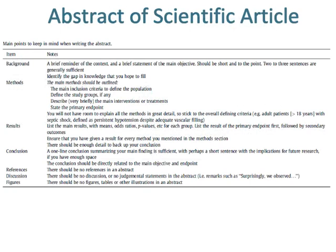Abstract of a scientific article. The background section is a brief reminder of the context and a brief statement of the main objective. It should be short and to the point — two to three sentences are generally sufficient. Identify the gap in knowledge that you hope to fill. In the methods section, the main methods should be outlined, including the main inclusion criteria to define the population and the study groups. Describe, very briefly, the main interventions or treatments and state the primary endpoint. You will not have room to explain all the methods in great detail, so stick to the overall defining criteria.